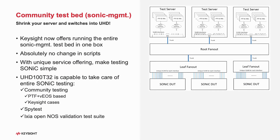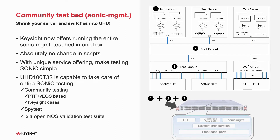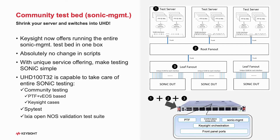Diving into a bit more detail on this solution: essentially what we've done is take the components of a SONiC testbed — number one, the testbed server; number two, the root fanout switch; and number three, the leaf fanout switch — and combine them into a single box. The community scripts from the SONiC management GitHub repository run without any change from this setup.